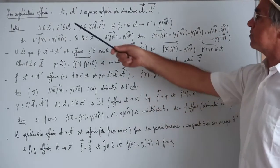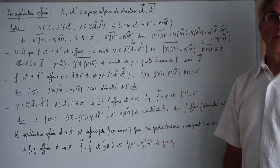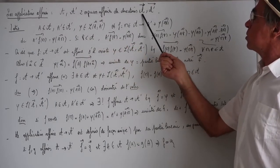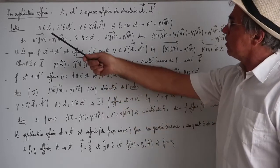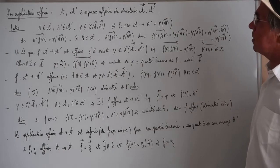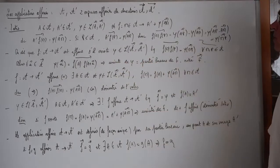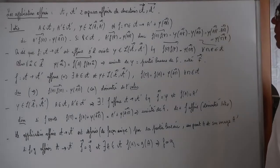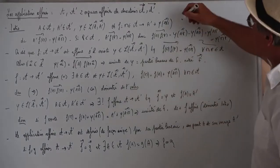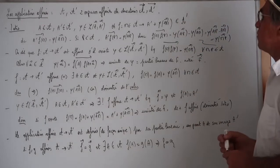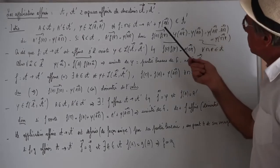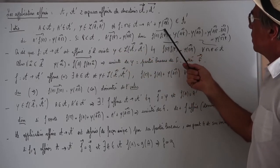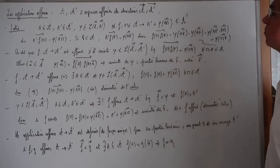Bienvenue sur les cours de Jean Phi pour ce chapitre consacré aux applications affines, c'est-à-dire au pendant des applications linéaires pour les espaces vectoriels. J'ai donc deux espaces affines A et A' dont je note ainsi les directions. Considérons un point A appartenant à A, un point A' dans A', et une application linéaire Φ de la direction de A vers la direction de A'. Je considère l'application de A vers A' qui à M fait correspondre A' plus Φ de AM. On est bien dans A' puisque Φ va de la direction de A vers la direction de A', et A' est un point de A'.